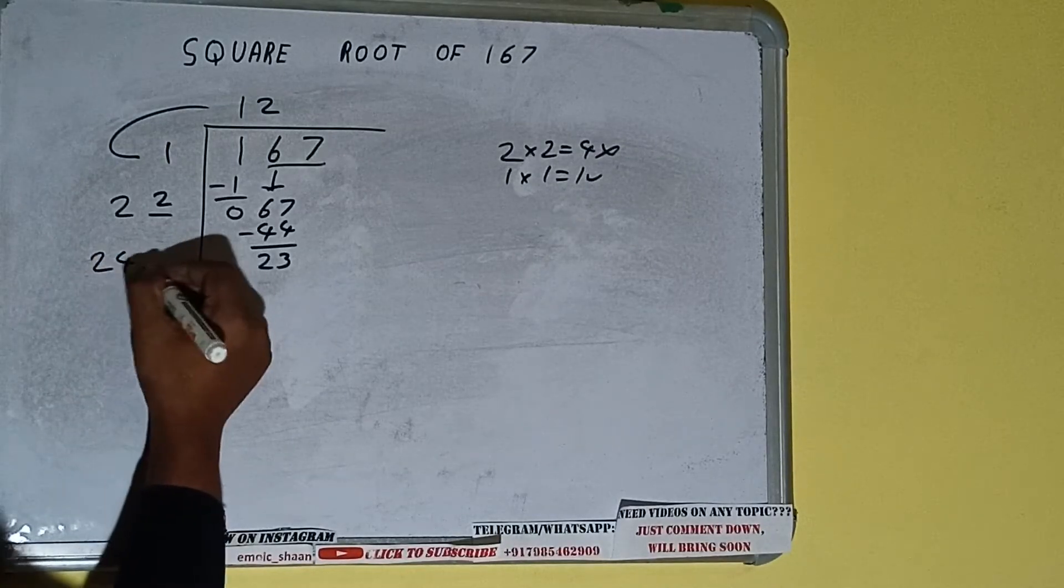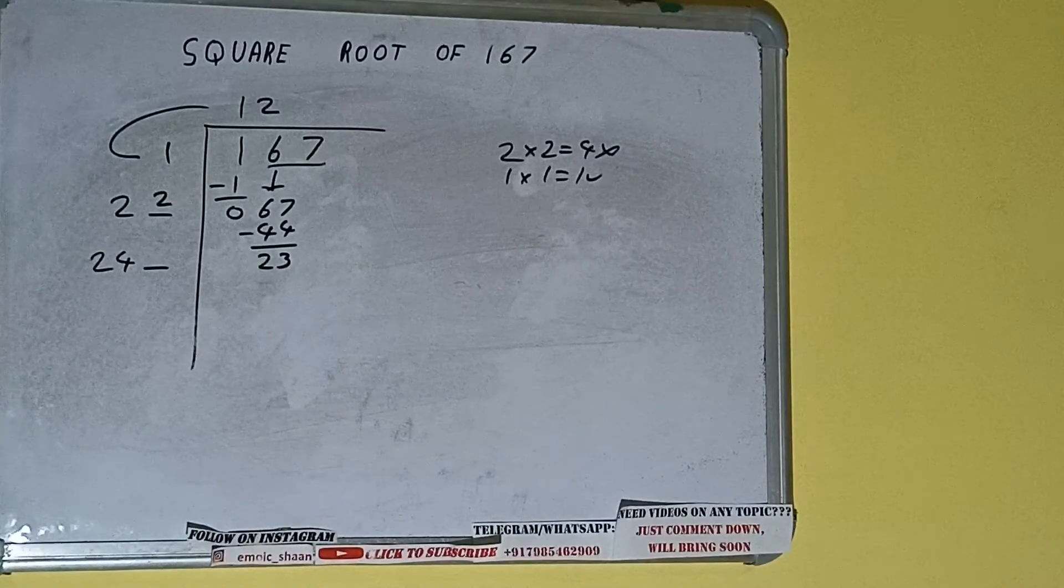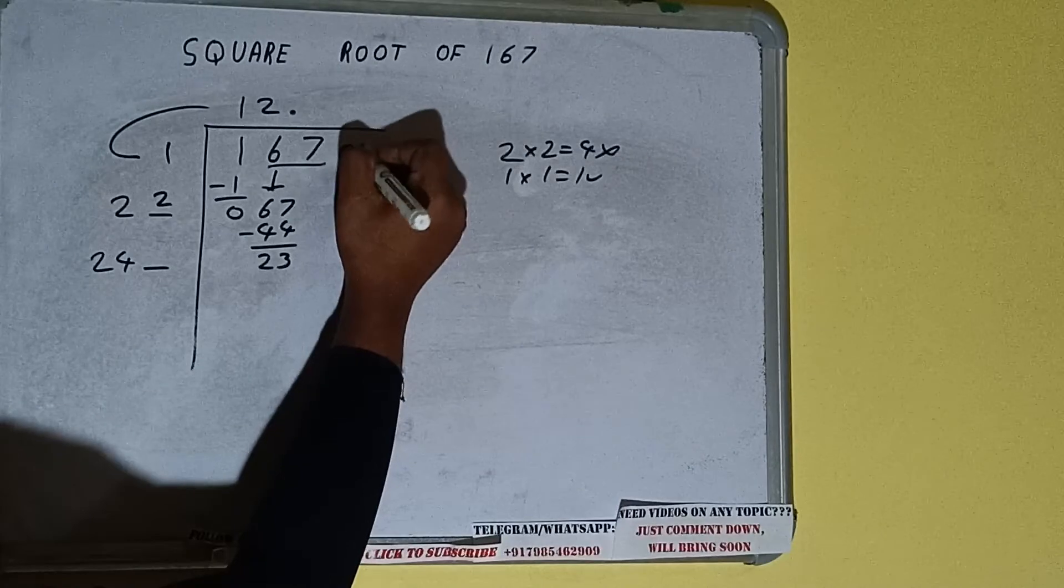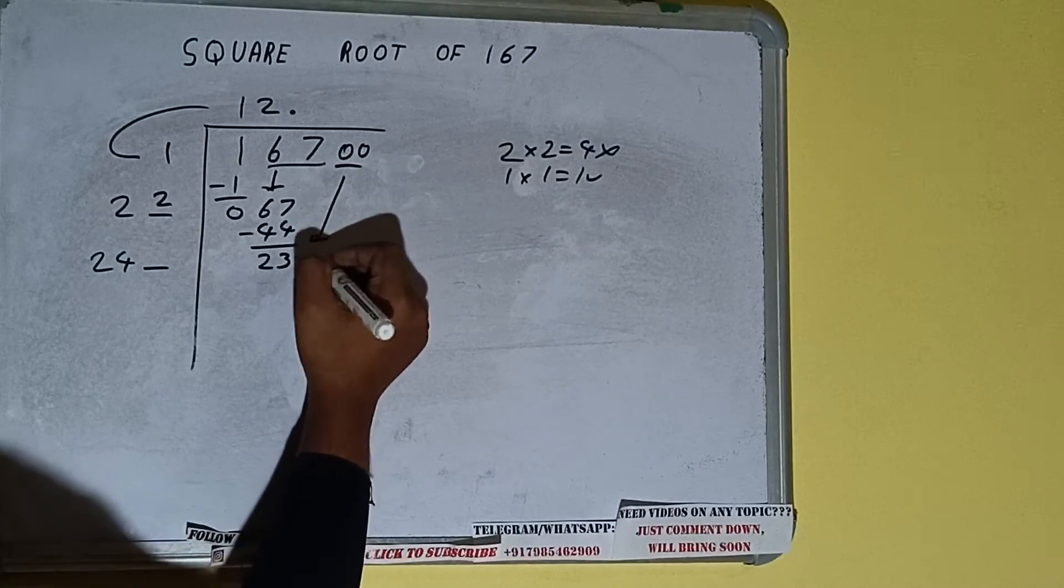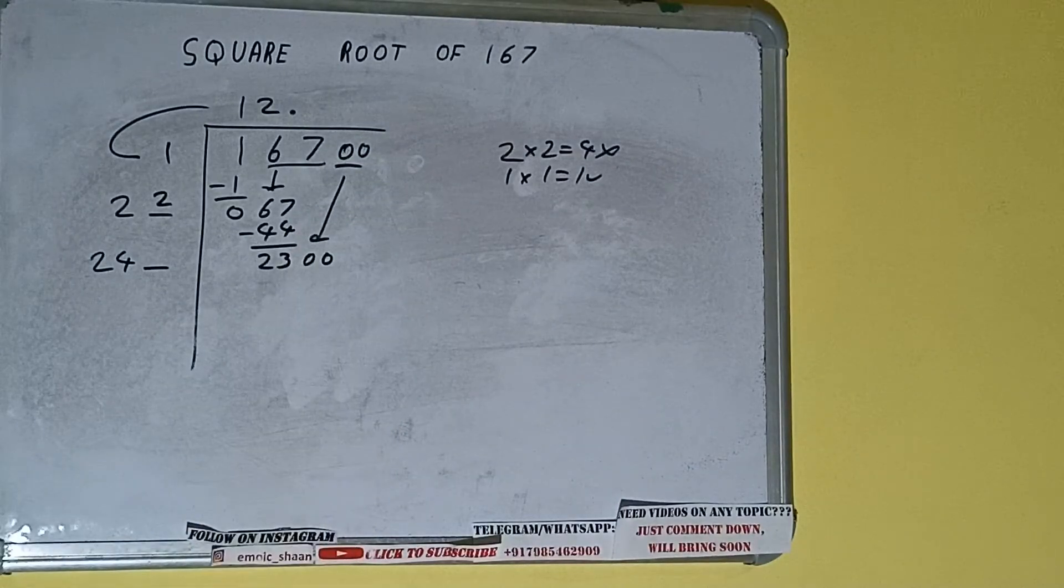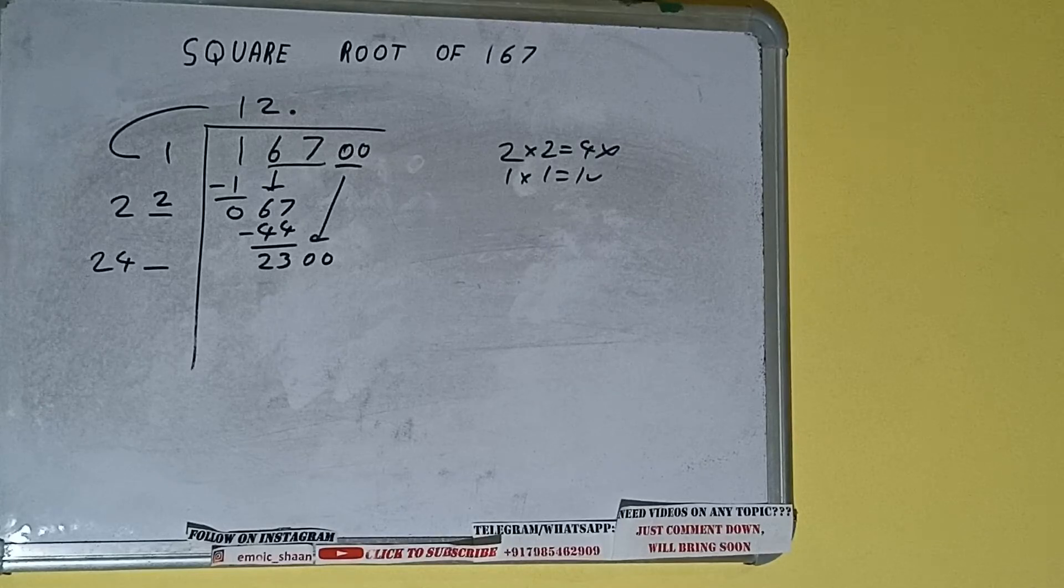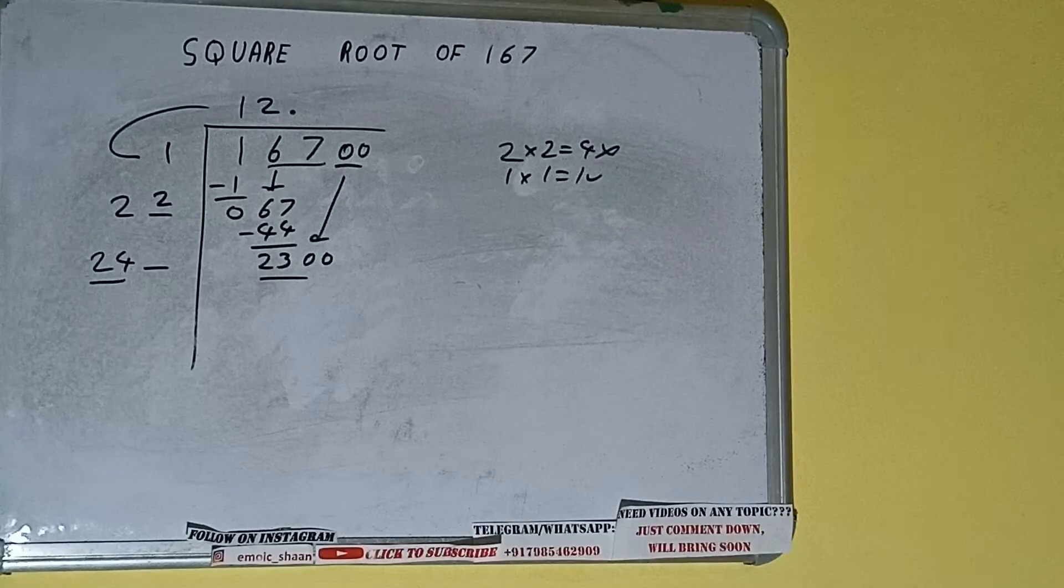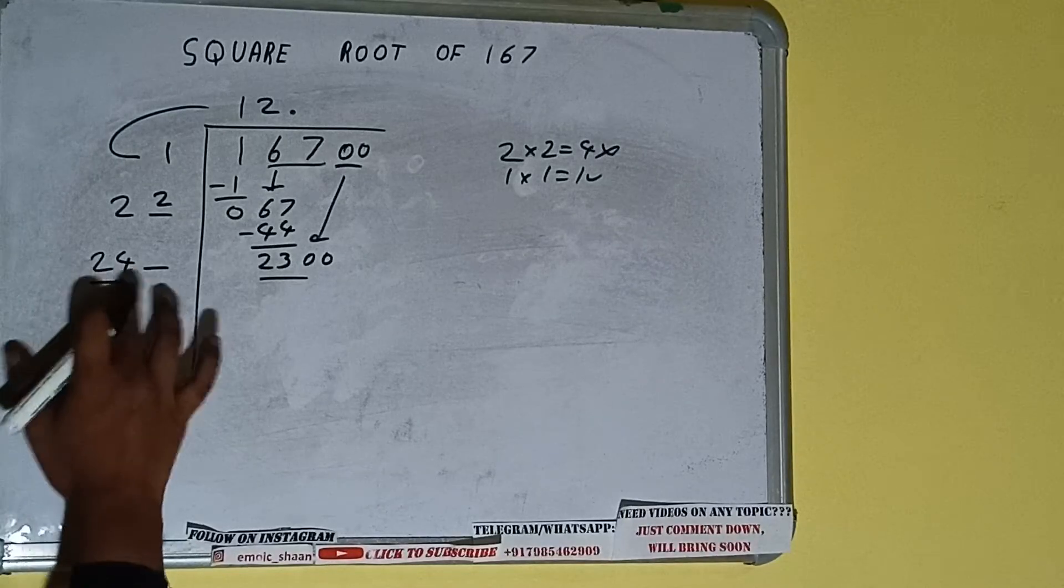Write it here and keep a digit extra. And this number we need to make it big. But we don't have any more pairs. So we'll put decimal. Once we put decimal we can bring pair of zeros down and it will be 2300. Now compare this 24 with this 230.